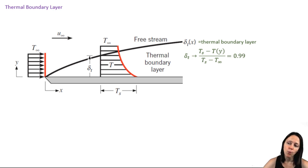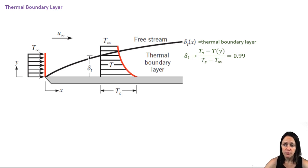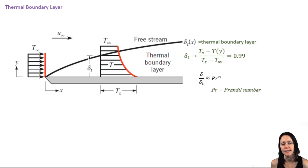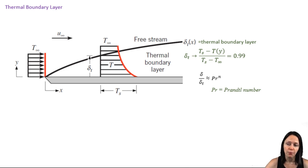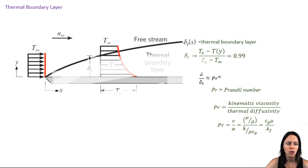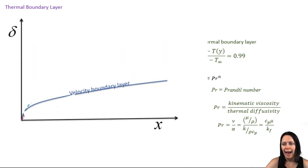You might be wondering how the velocity boundary layer and the thermal boundary layer are related. The thermal boundary layer and the velocity boundary layer are related via the Prandtl number. This is the general relationship where n is a positive exponent. The Prandtl number is a ratio of the viscous effects versus the thermal effects.